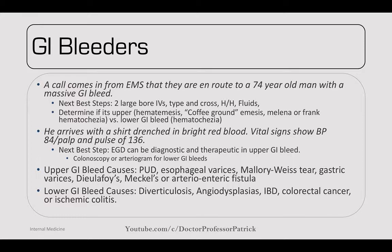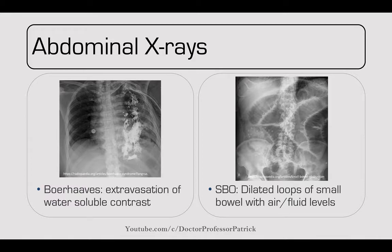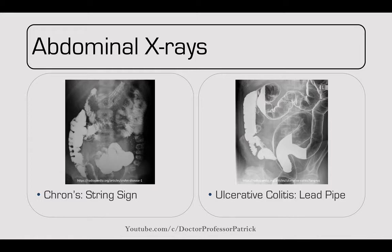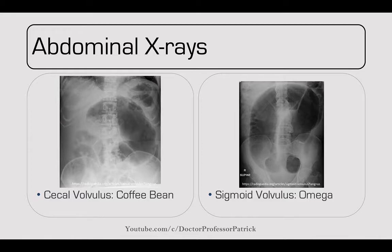Abdominal X-ray review — normal KUB with organ overlay. Perforation: free air under the diaphragm. Boerhaave syndrome: extravasation of water-soluble contrast outside the esophagus into the anterior mediastinum. Small bowel obstruction: dilated loops with air-fluid levels. Crohn's disease: classic string sign. Ulcerative colitis: lead pipe sign with loss of haustra. Toxic megacolon: dilation >10 cm with inflammation and risk of perforation. Ogilvie syndrome: large dilation of the sigmoid colon post-op. Cecal volvulus (coffee bean sign, toward right upper quadrant) versus sigmoid volvulus (omega sign, straight up and down).